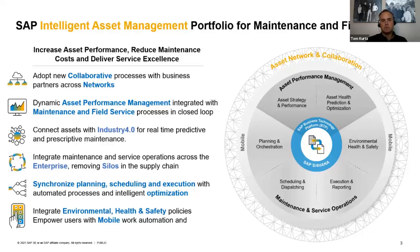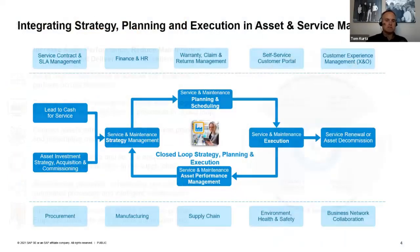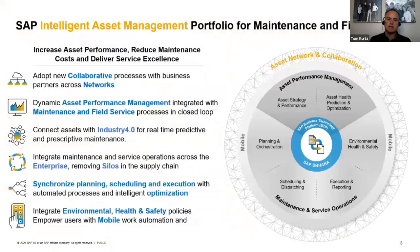You need to integrate your maintenance and service operations across the larger enterprise, removing silos. You need to synchronize and optimize how you plan, schedule, and execute maintenance work — work order management, service order management. And you need to integrate your EH&S systems and leverage mobility to empower workers remotely. On the right side of this slide, we represent this visually: syncing together your asset performance management systems with maintenance and service operation capabilities, then extending beyond the enterprise to your stakeholder group through asset network and collaboration.